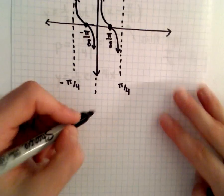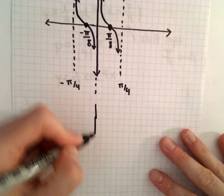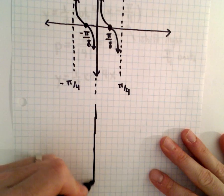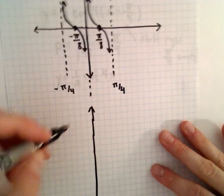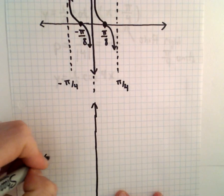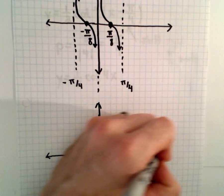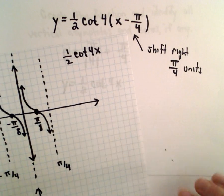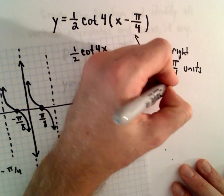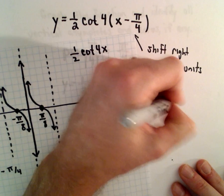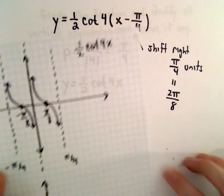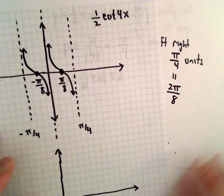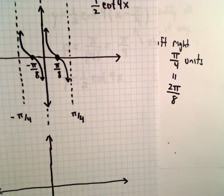So what I'm going to do now to figure out, to get my new graph, the graph we're actually interested in, is I'm going to take everything and just shift it by pi over 4 units to the right. So pi over 4, that's the same thing as 2 pi over 8. So let's see here. Notice if we do that, what's going to happen?